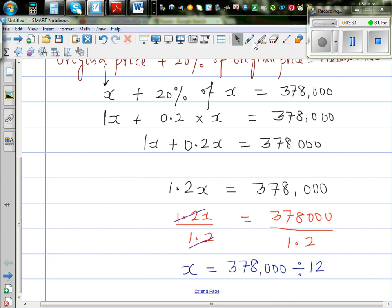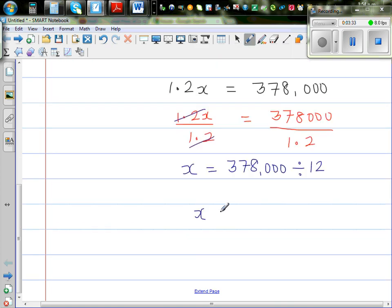So x is 315,000. Therefore, the original price of the house is $315,000.